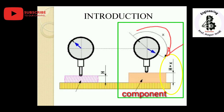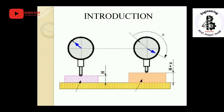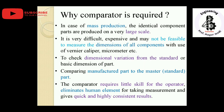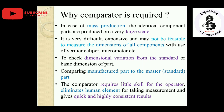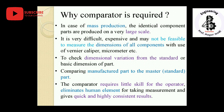In mass production, identical component parts are produced on a very large scale, so it is difficult, expensive, or not feasible to measure every component with vernier calipers and micrometers — that would be laborious work. Using a comparator, you can make 100% assessment of each component to check dimensional variations from the standard or basic dimensions, and compare manufactured parts to master or standard parts.